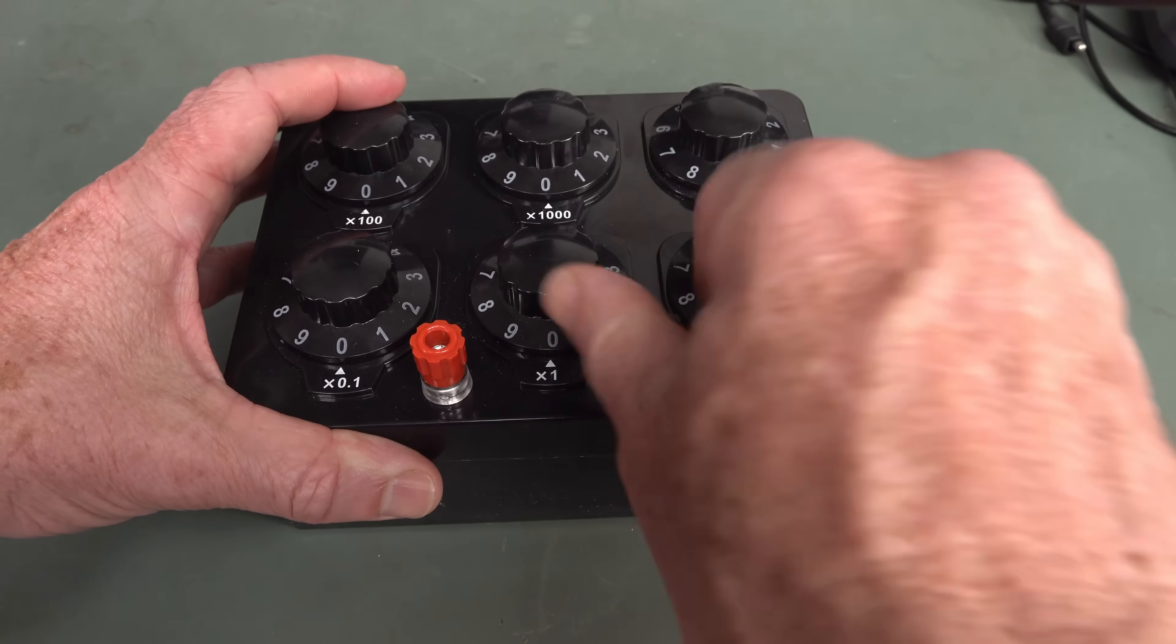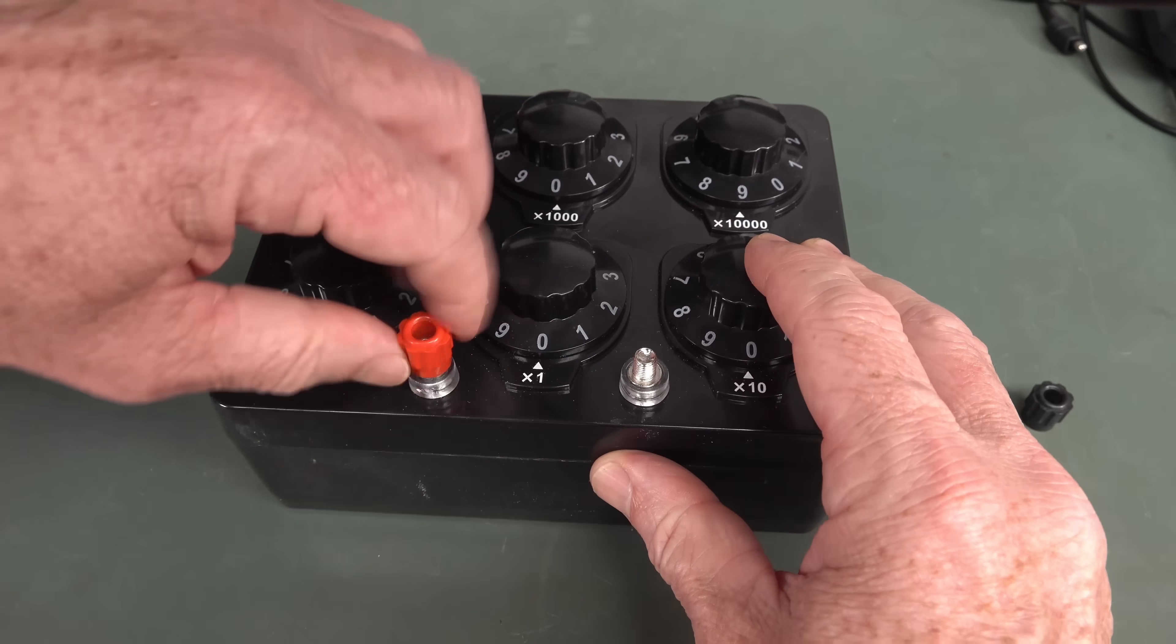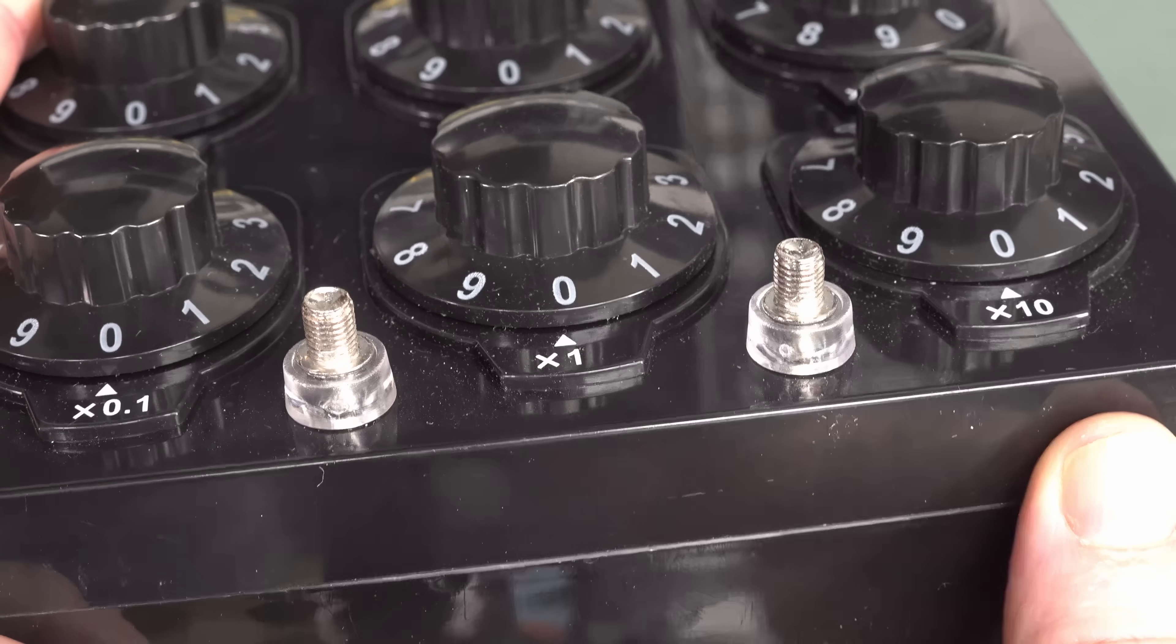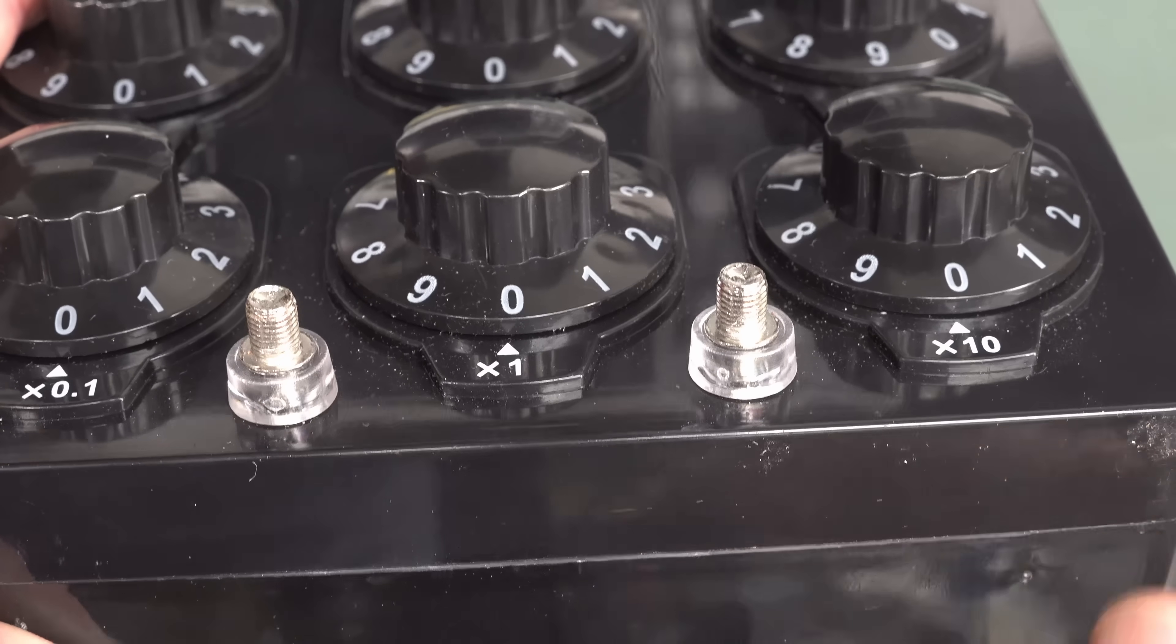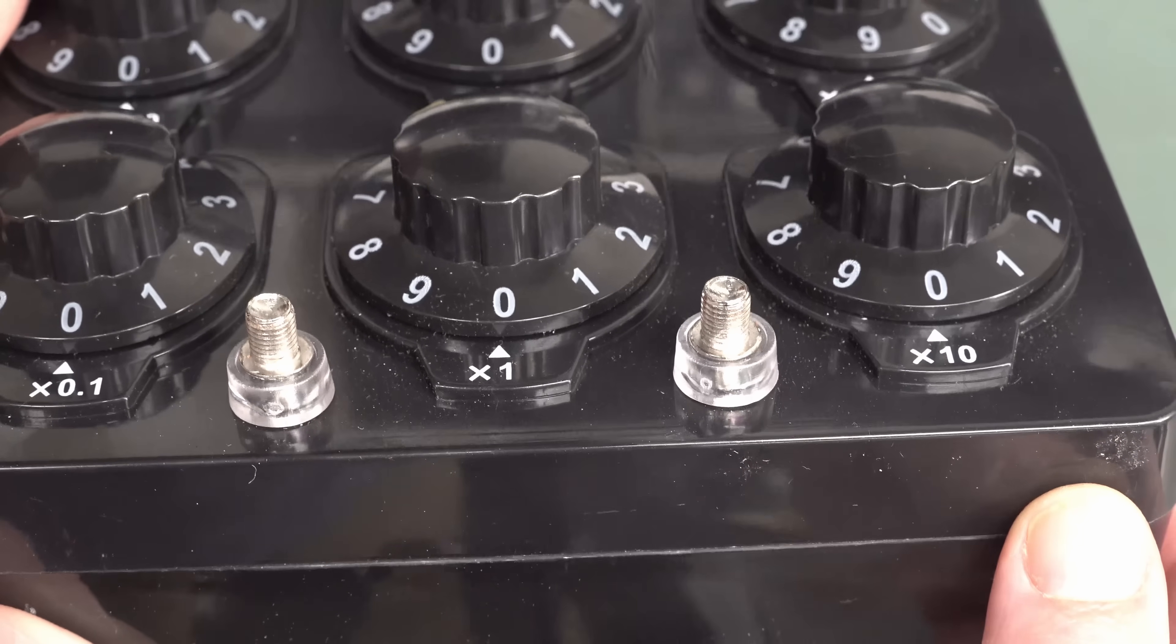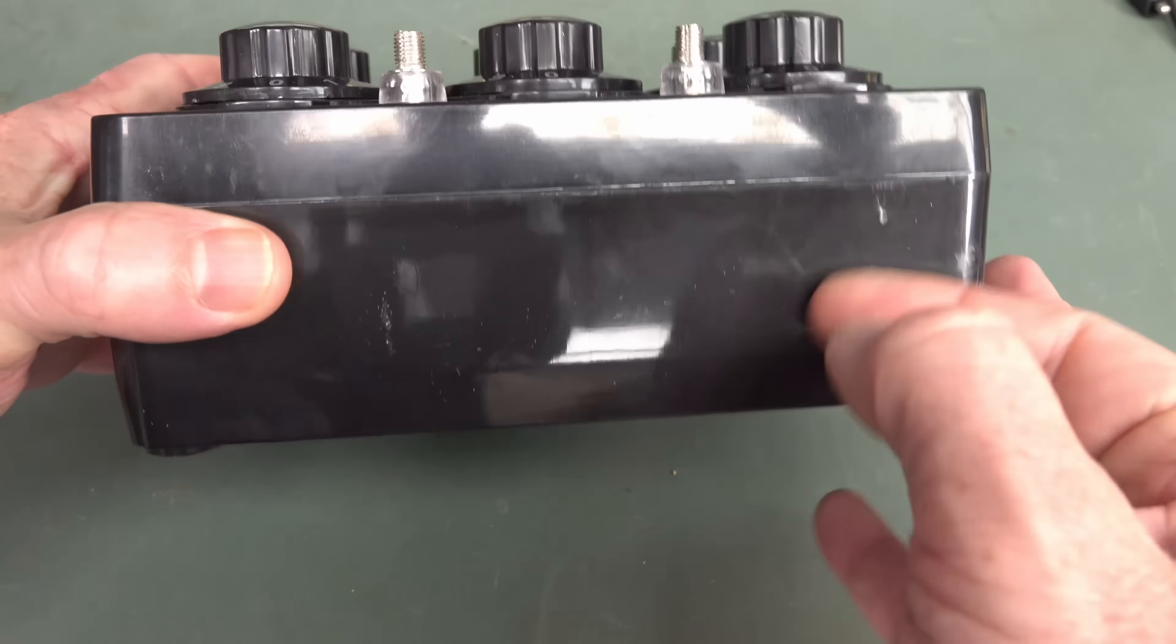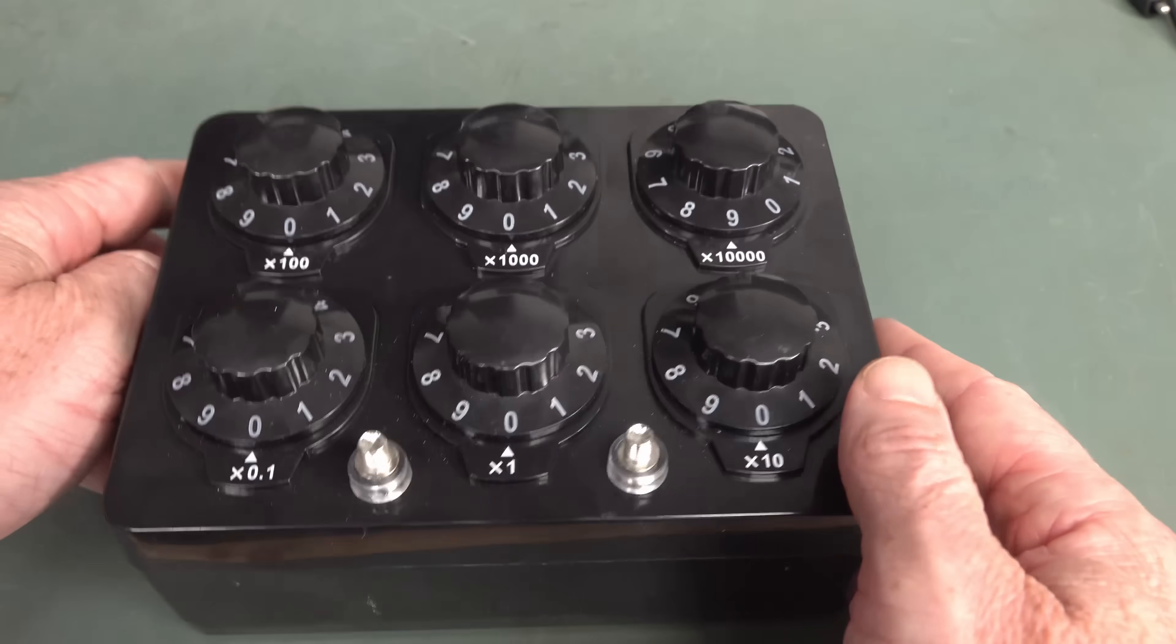You've got two binding posts here, and this is probably the biggest letdown. These are the cheapest, crappiest looking binding posts I've ever seen. They don't have banana plug compatibility on top, they don't even have a hole in the side to put a wire through. I'd be swapping those out as soon as you get one.